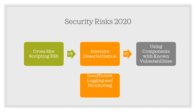Security misconfiguration is the most commonly seen issue. It is commonly a result of insecure default configurations, incomplete or ad-hoc configurations, open cloud storage, misconfigured HTTP headers, and verbose error messages containing sensitive information. Not only must all operating systems, frameworks, libraries, and applications be securely configured, but they must be patched in a timely fashion.